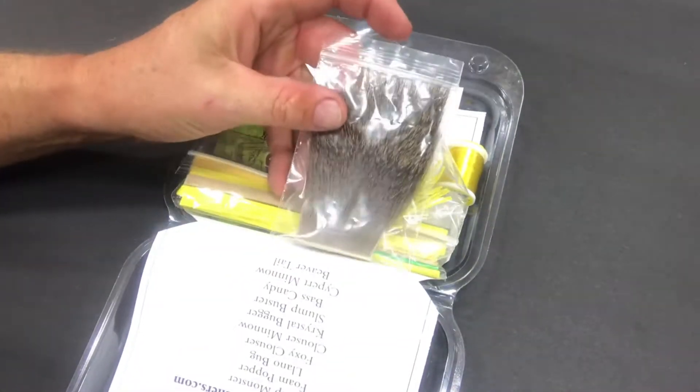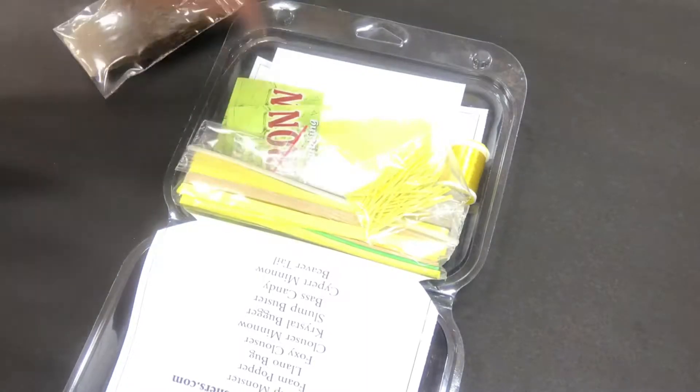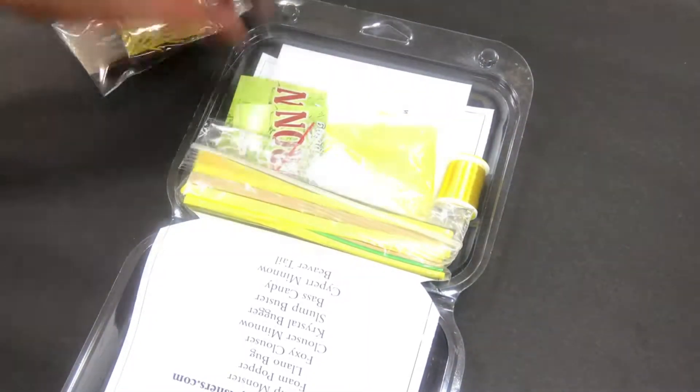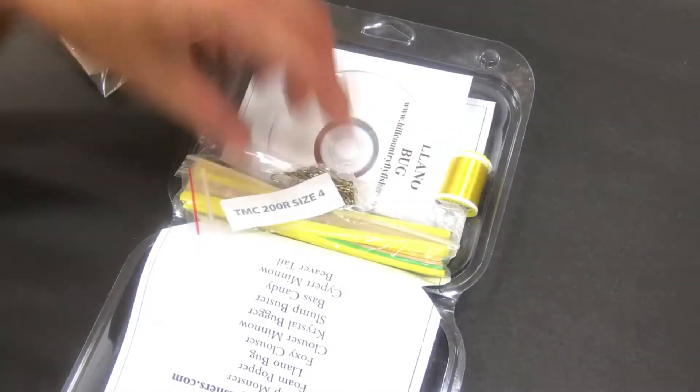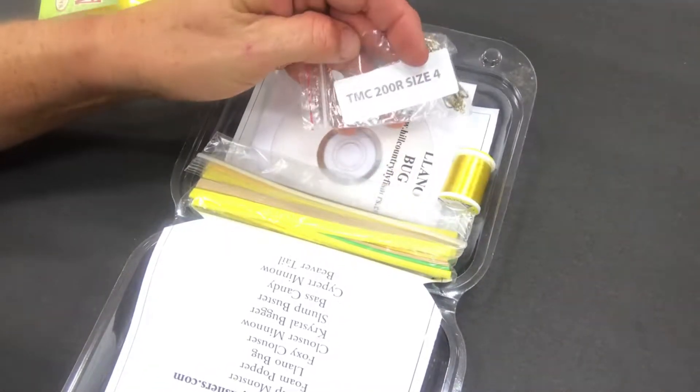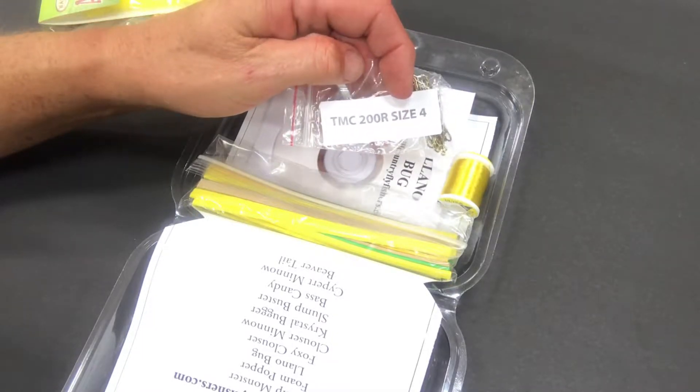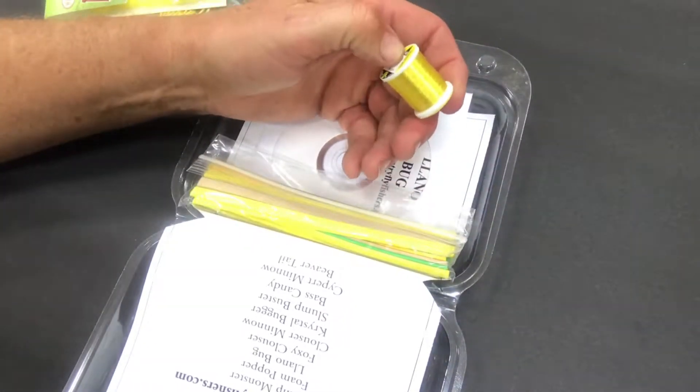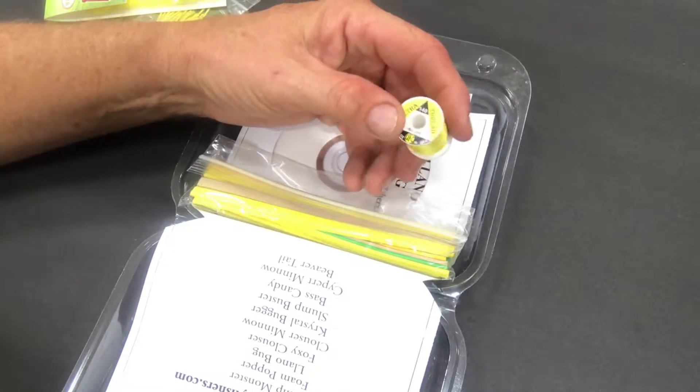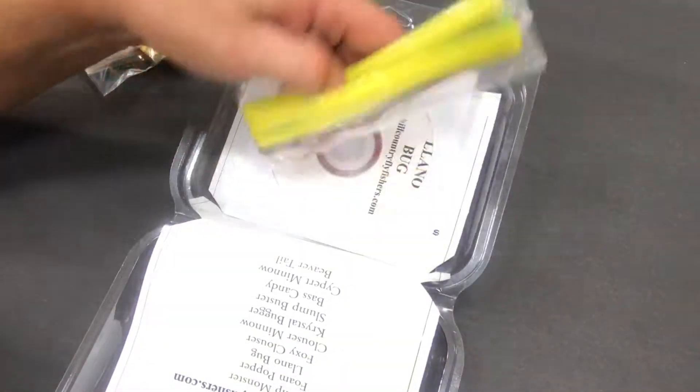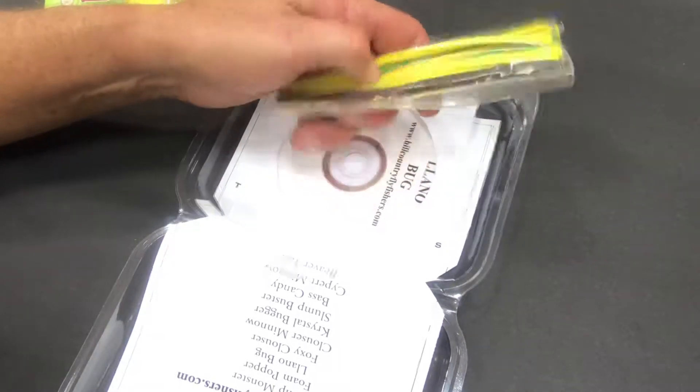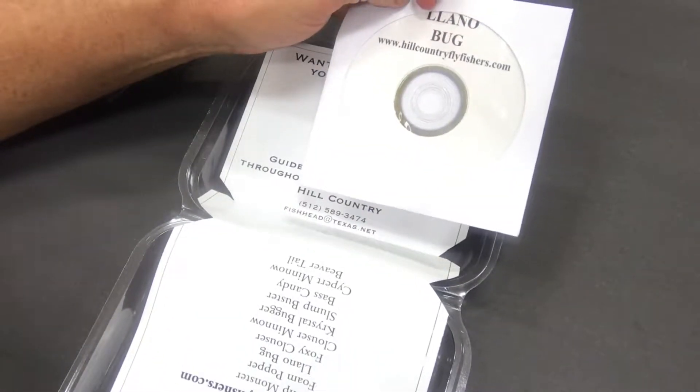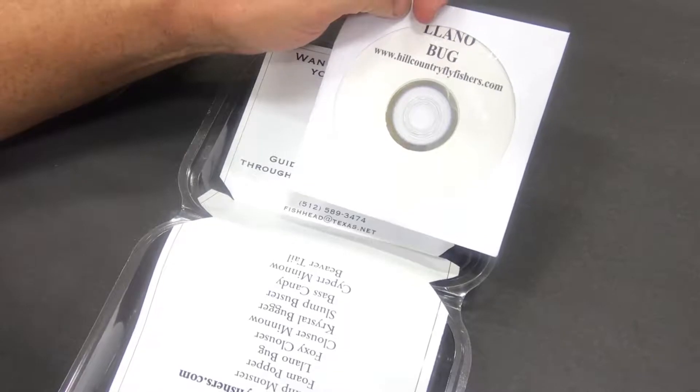Okay, we have deer hair, you'll need that for the wing. Rubber legs, need those. Some yellow Antron dubbing. Twenty-four TMC 200R number four hooks. Some UTC 140 yellow thread. Some different two millimeter quarter inch wide foam strips, and every kit comes with a video.